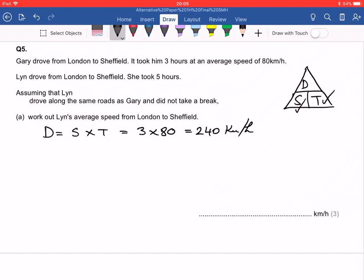So let's look at Lynn. She drove from London to Sheffield and she took five hours. So we've got her time which equals five hours and here we worked out the distance which is 240 kilometers.